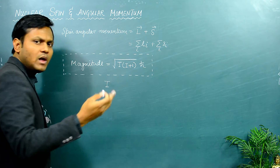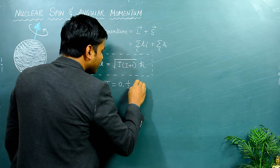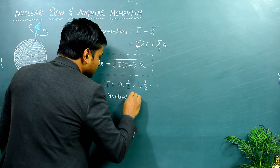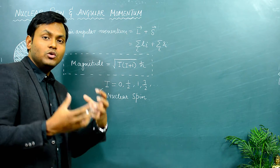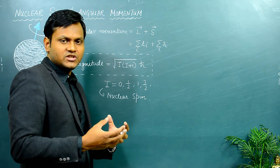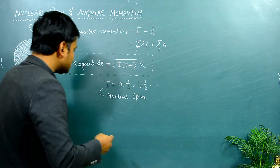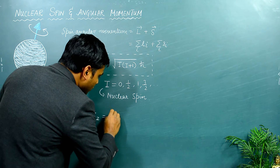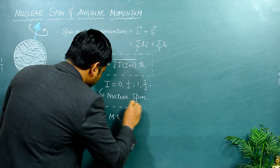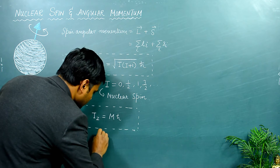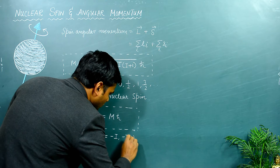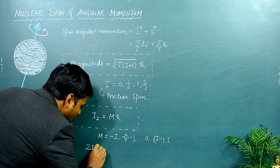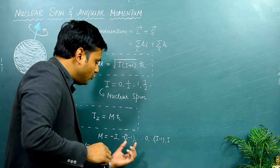Here I is a quantum number that can take values of zero, one-half, one, three-halves, and so on. This is sometimes referred to as nuclear spin, and this expression gives the quantization of the nuclear angular momentum magnitude. The direction in which this angular momentum is oriented in space is also quantized: the z-component of the angular momentum with respect to some z-axis is equal to mℏ, where m takes 2I+1 values from −I to +I in steps of one.